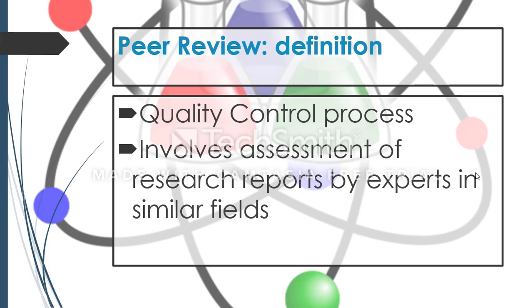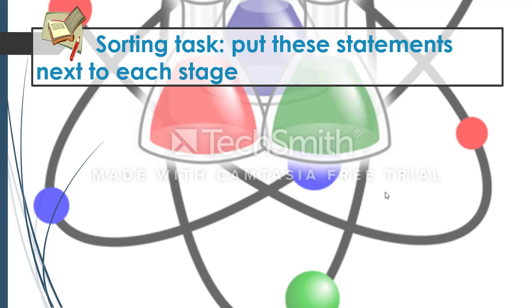Peer review involves the assessment of research reports by experts in similar fields — these experts are the people who conduct the peer review. On the next page there's a diagram that depicts the step-by-step process of what actually happens during peer review.